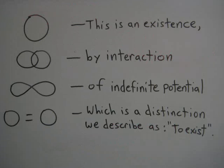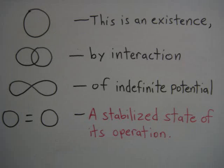At the heart of an existence is an absolute relationship. Information in terms of the potential is the distinction of itself. The interaction for this distinction is a stabilized state of its operation.